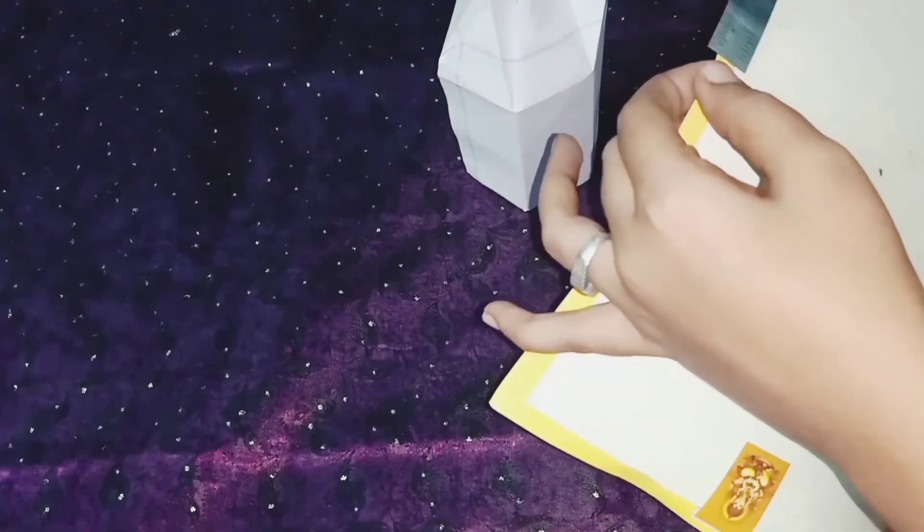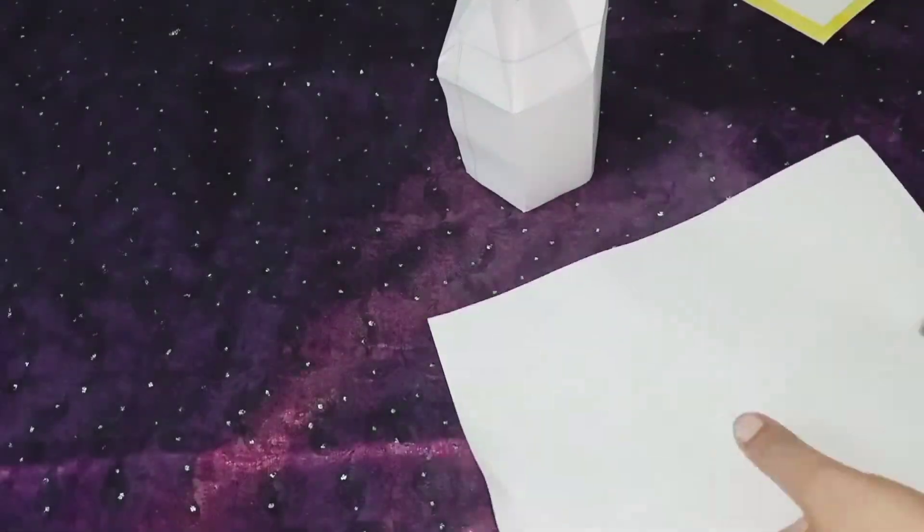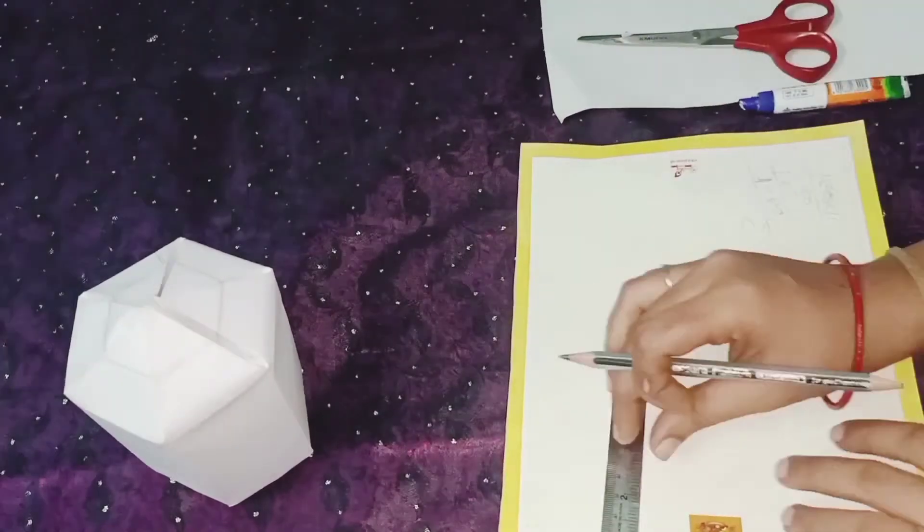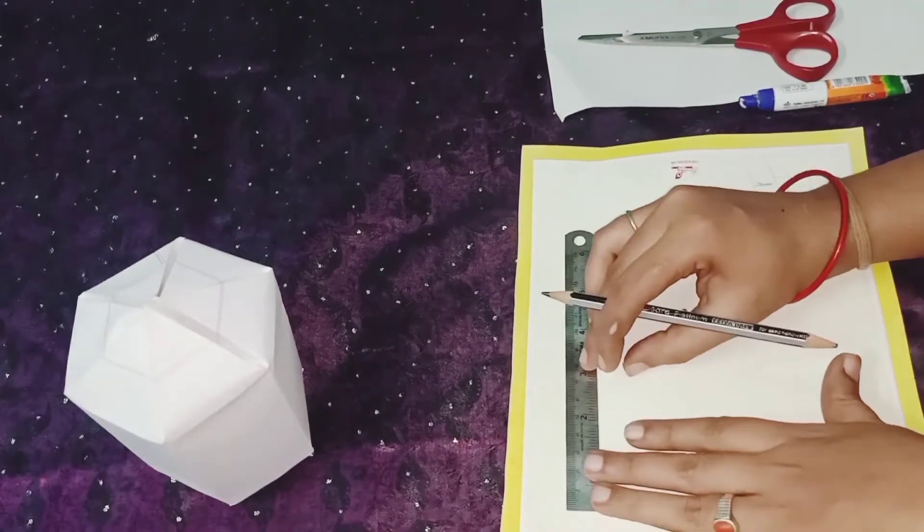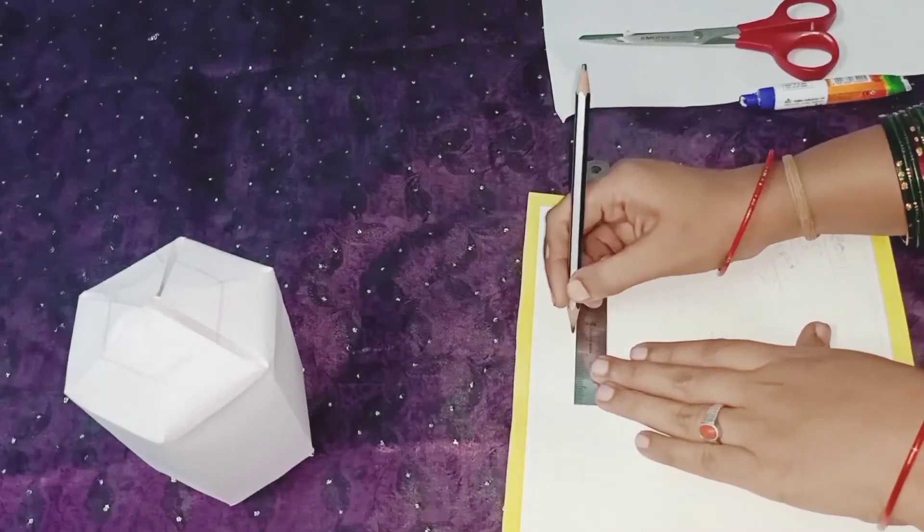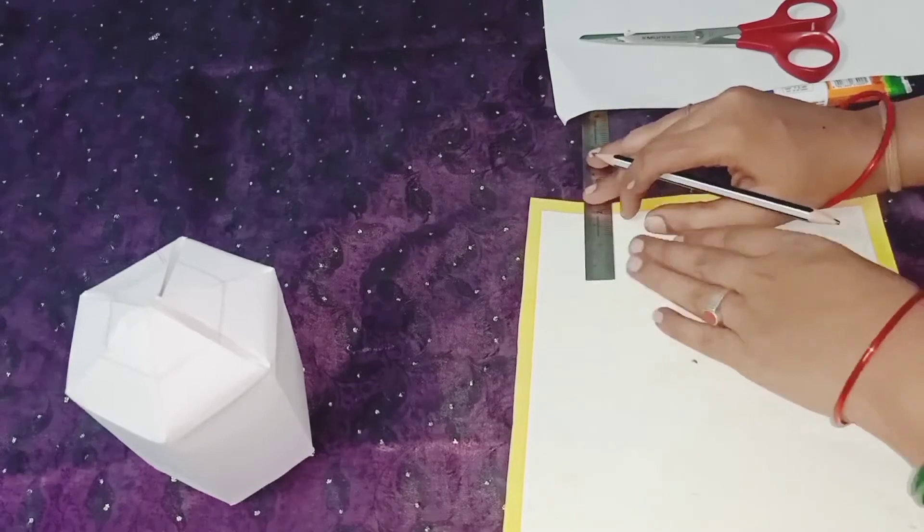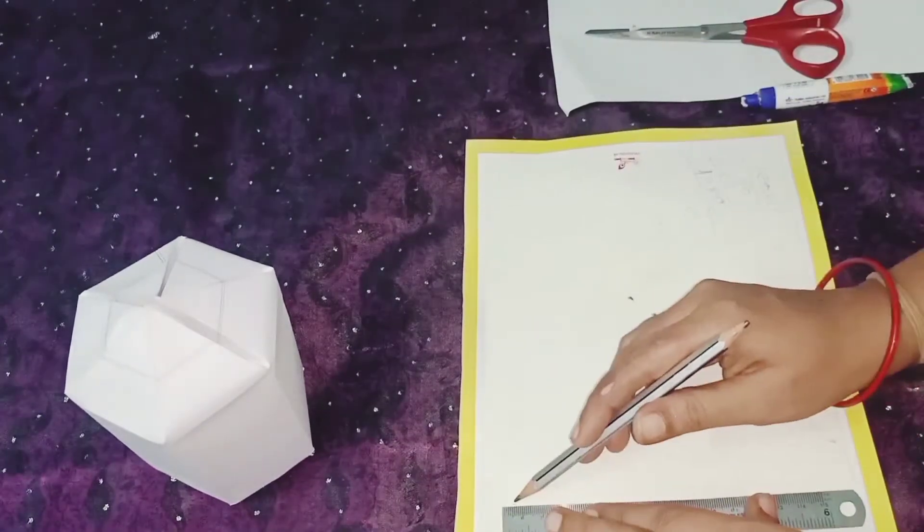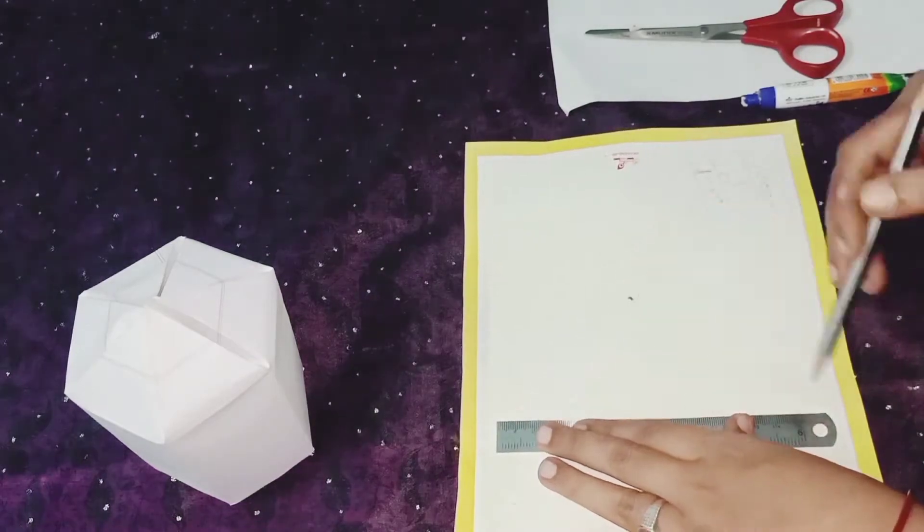Measure the paper and divide it by number 6. As I have got 30 centimeter children, 30 divided by 6 is 5 centimeter. So I have marked 5 centimeter and I have extra space of 0.5 centimeter that can be used for sticking.